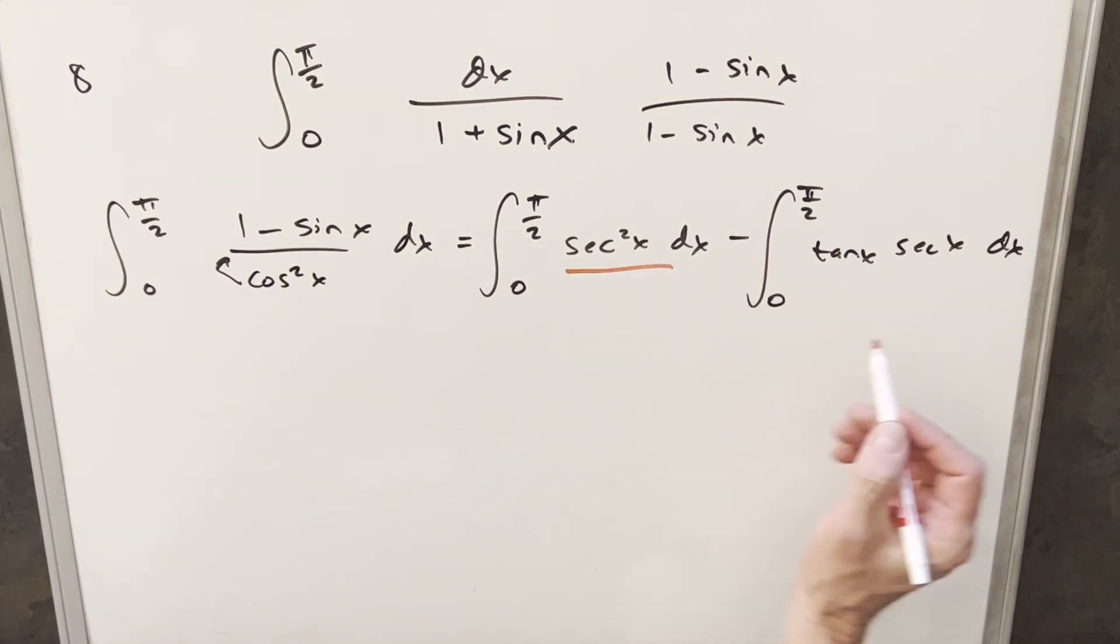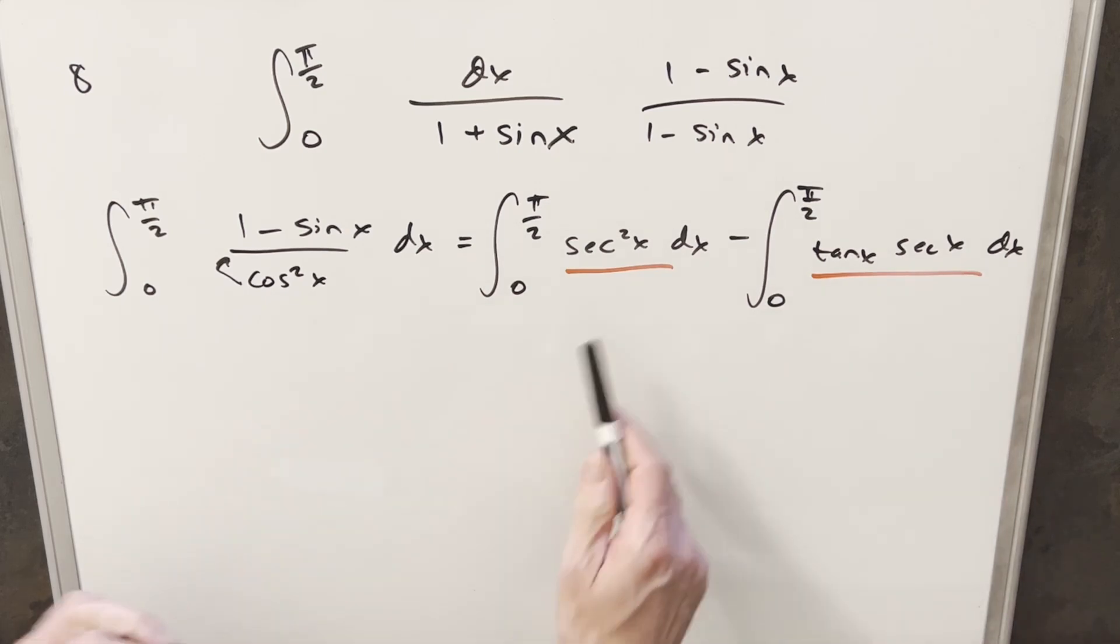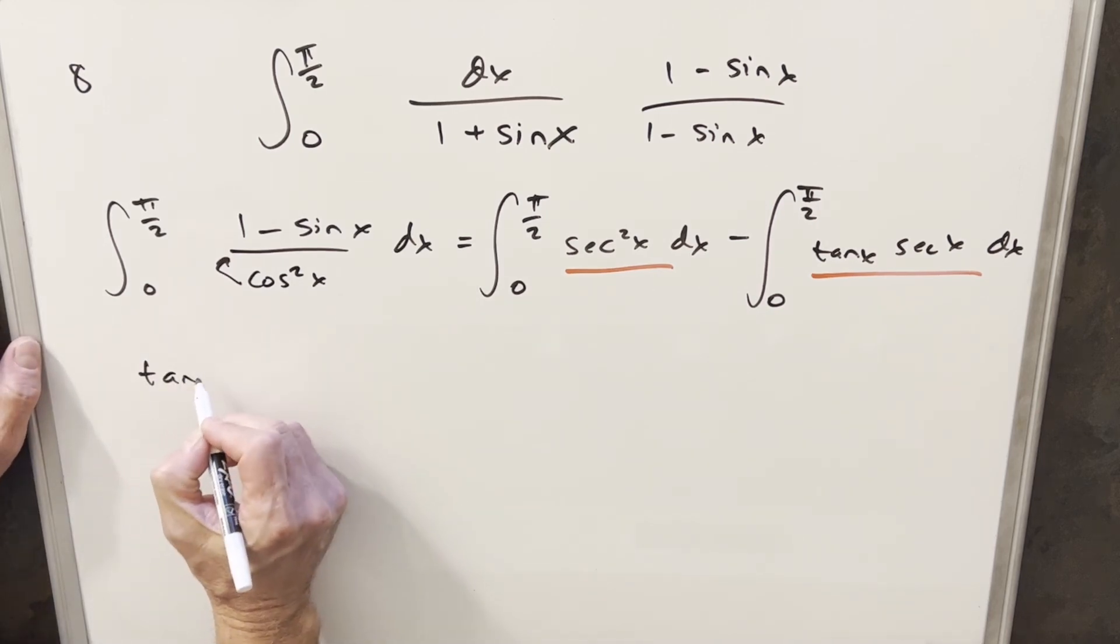And now we have two easy, very well-known integrals here. So we just kind of memorize the formula for each of these. So for secant squared x integrating this, this is going to give me tan x.